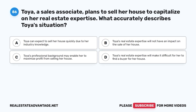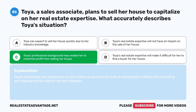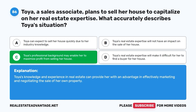Question 86. Toya, a sales associate, plans to sell her house to capitalize on her real estate expertise. What accurately describes Toya's situation? A. Toya can expect to sell her house quickly due to her industry knowledge. B. Toya's real estate expertise will not have an impact on the sale of her house. C. Toya's professional background may enable her to maximize profit from selling her house. D. Toya's real estate expertise will make it difficult for her to find a buyer. The correct answer is C. Toya's knowledge and experience in real estate can provide her with an advantage in effectively marketing and negotiating the sale of her own property.